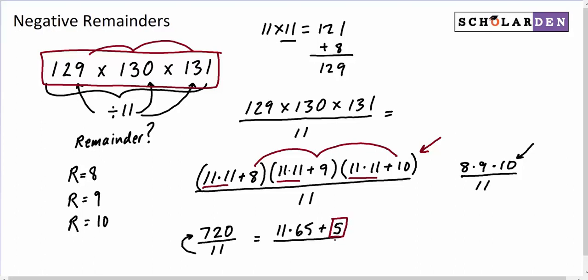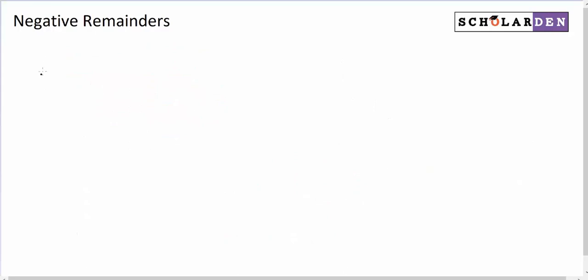Now let's do that using negative exponents, and we're going to see that that gives us an easier number at the end here. We're not going to have to deal with that division. So the problem was 129 times 130 times 131 over 11.